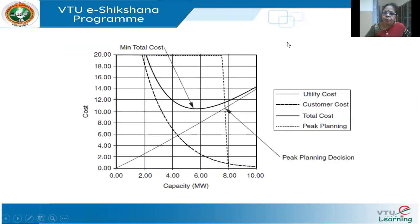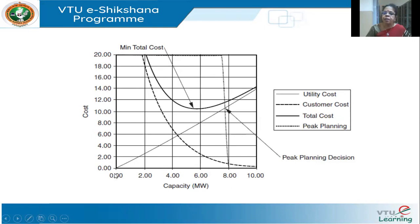This cost of risk, both from the utility perspective and the customer perspective, must be considered in competitive planning. This can be represented by a curve where the x-axis is capacity and the y-axis is cost. For the utility, as capacity building increases, the cost also increases — a straight line going up. For the customer, as capacity builds, the customer cost will come down.